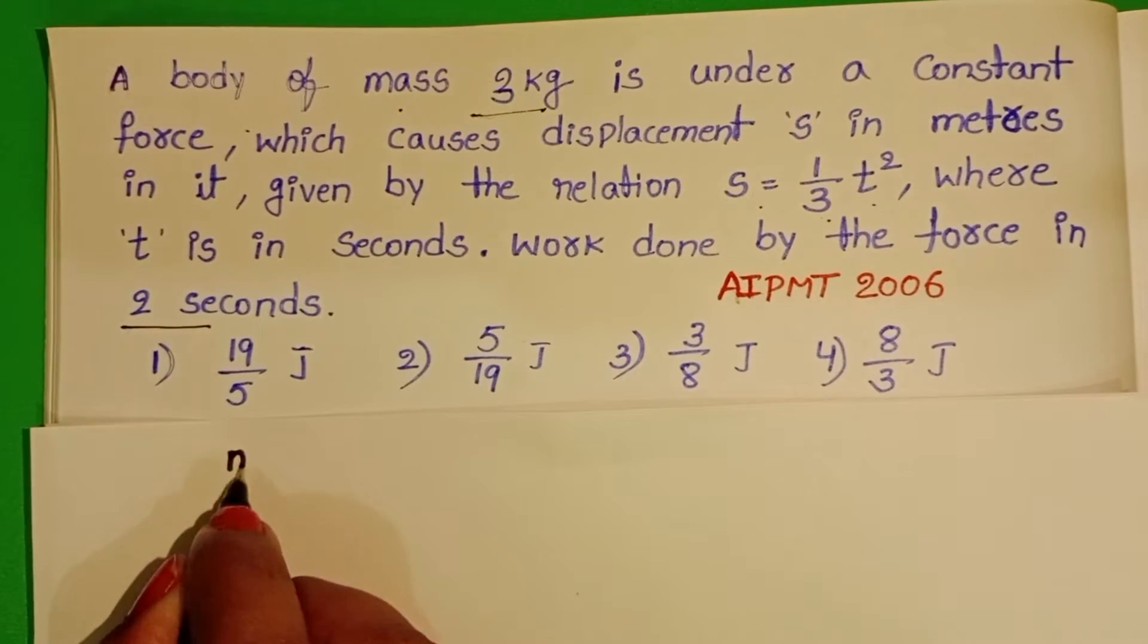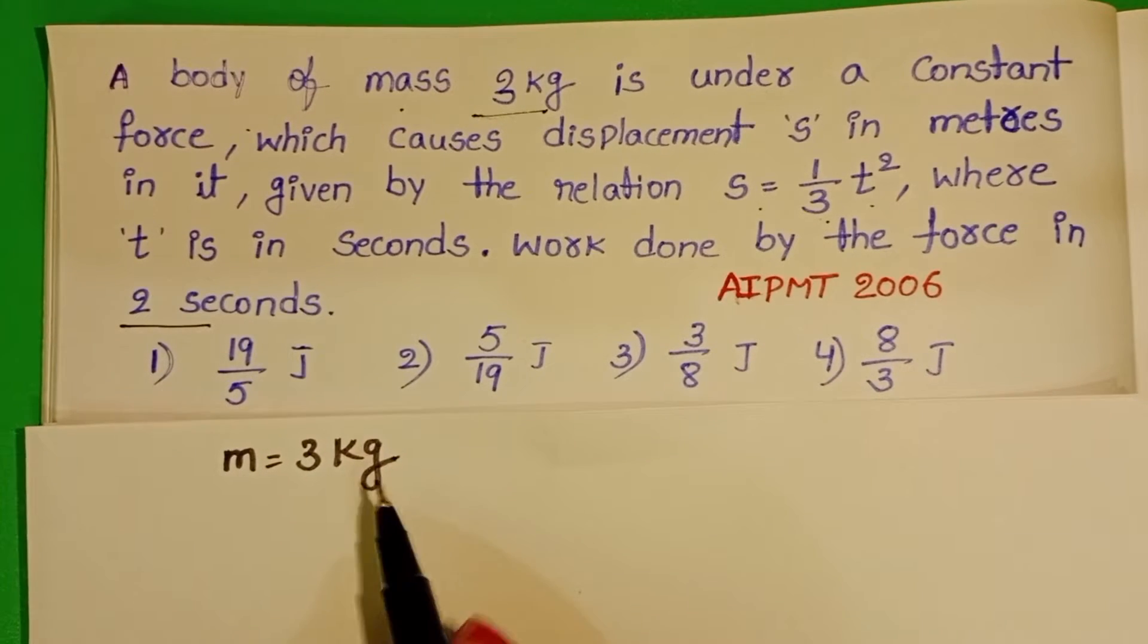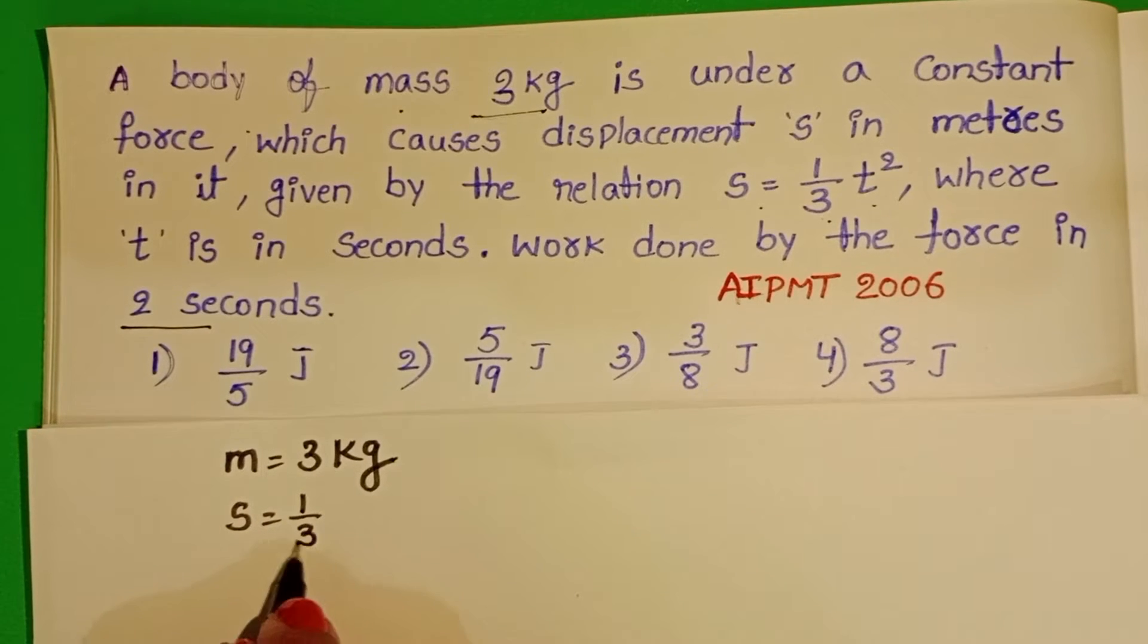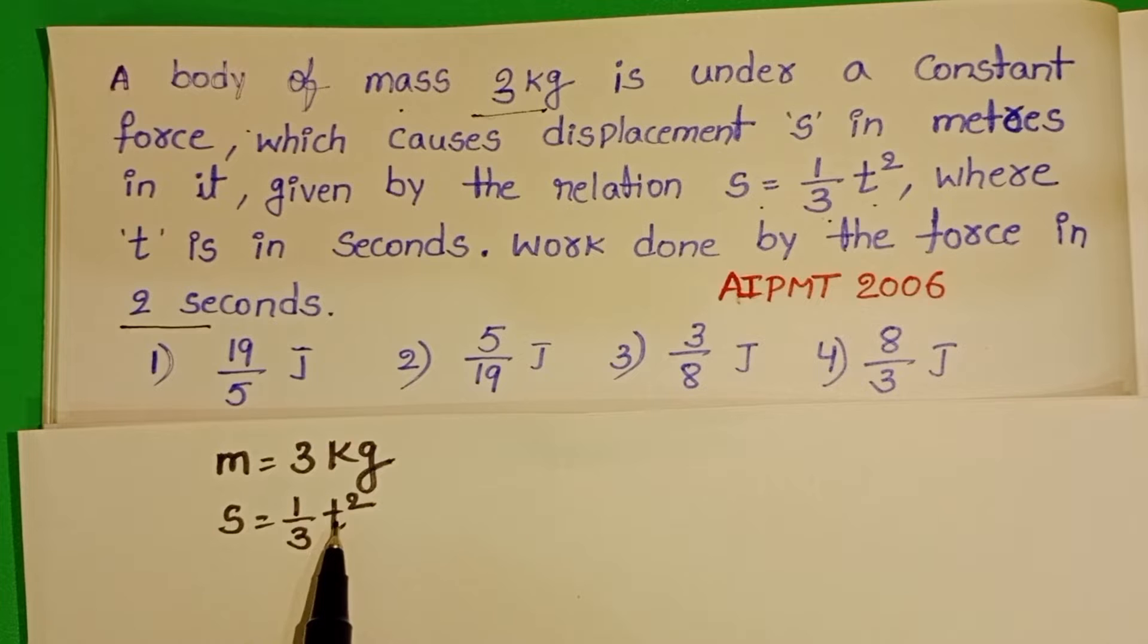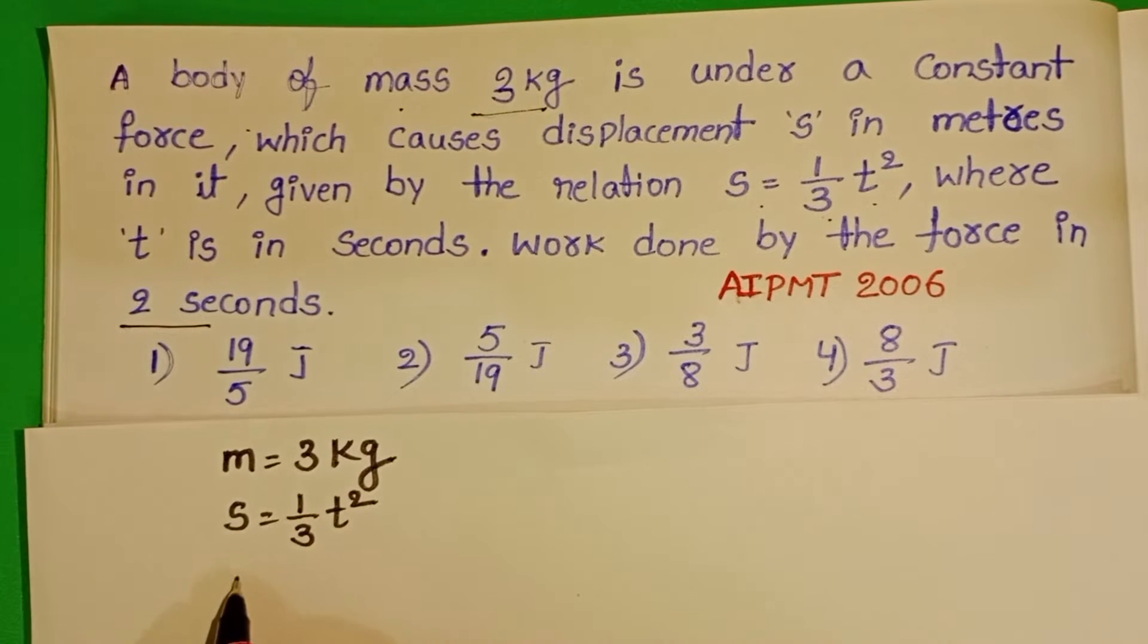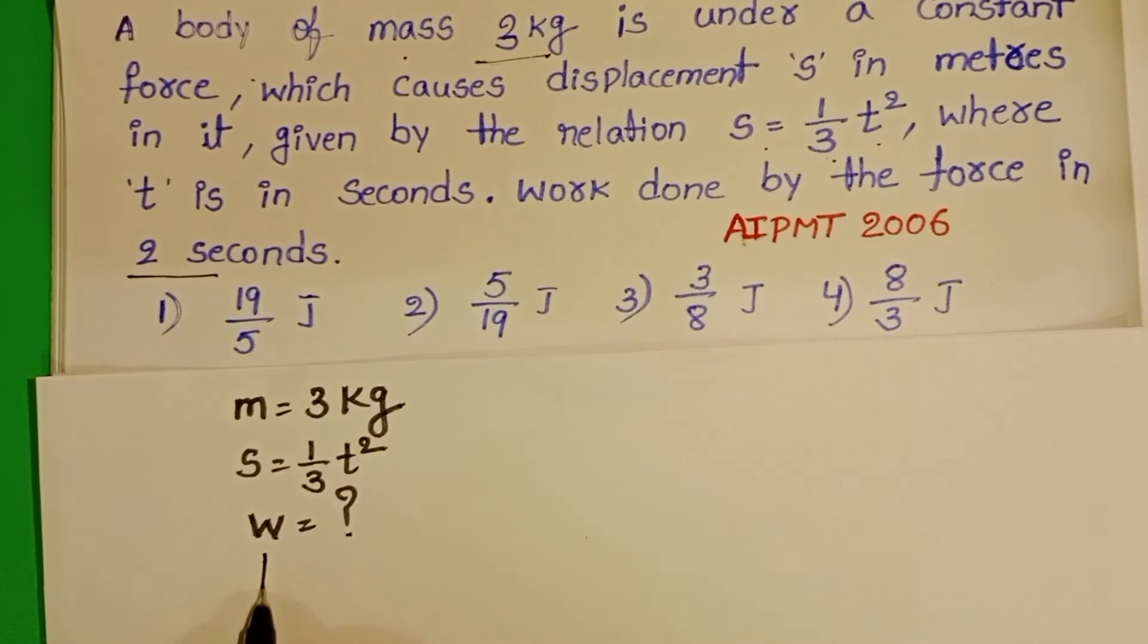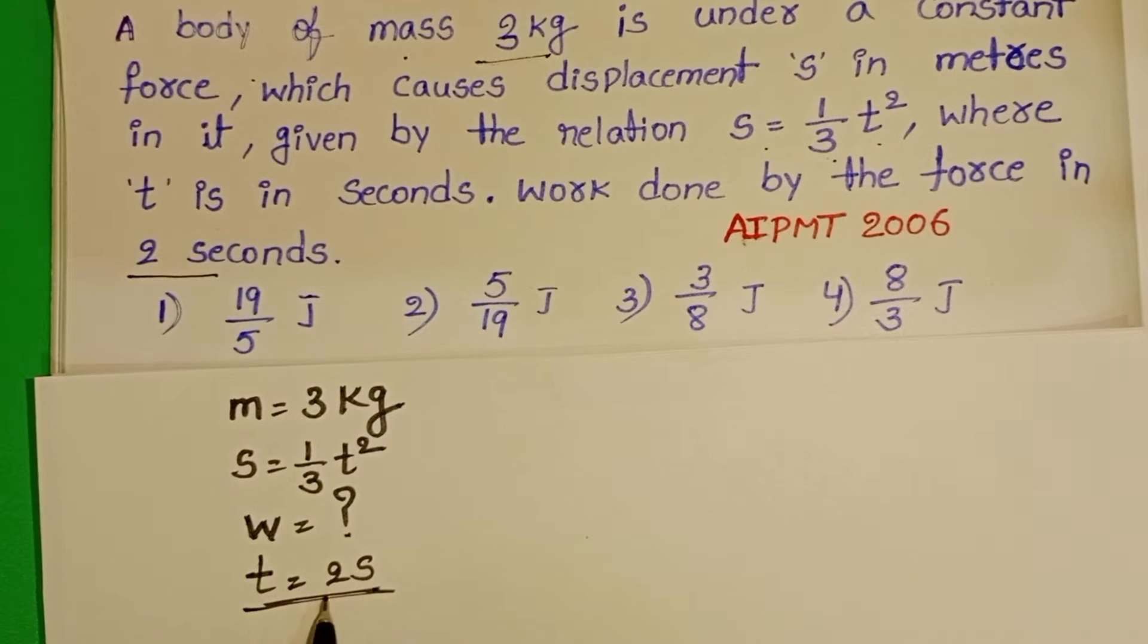Given: mass of the body M equals 3 kg, and the relation S equals 1 by 3 T square. Here displacement is a function of time. We have to find out the work done within 2 seconds, so the given time is 2 seconds.